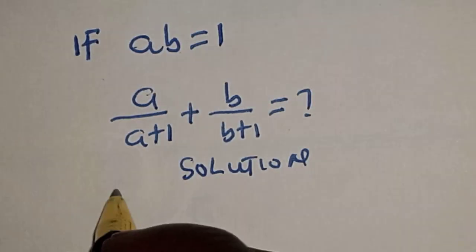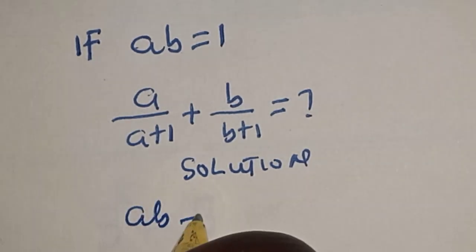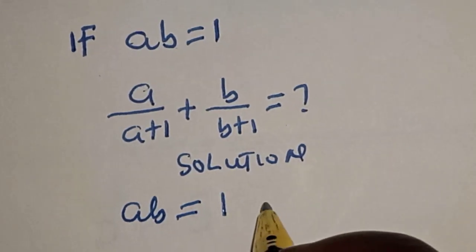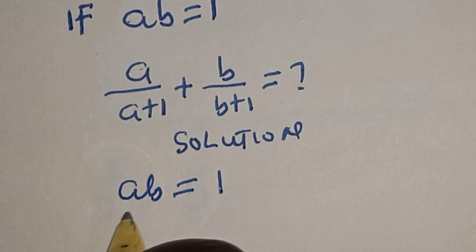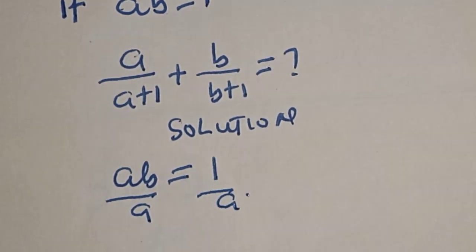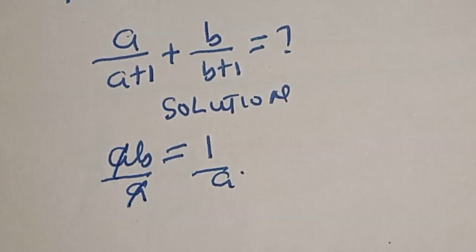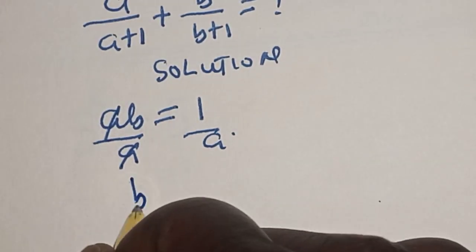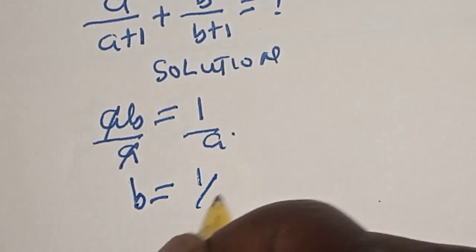We have the equation ab is equal to 1. From this equation, let's divide both sides by a. Then this one will cancel this. b is equal to 1 over a.